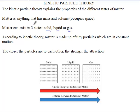Matter is anything that has mass and volume. When we say volume, that means it occupies space. So anything you see around us exists in one of these three states. The kinetic particle theory seeks to explain the properties of the different states of matter.